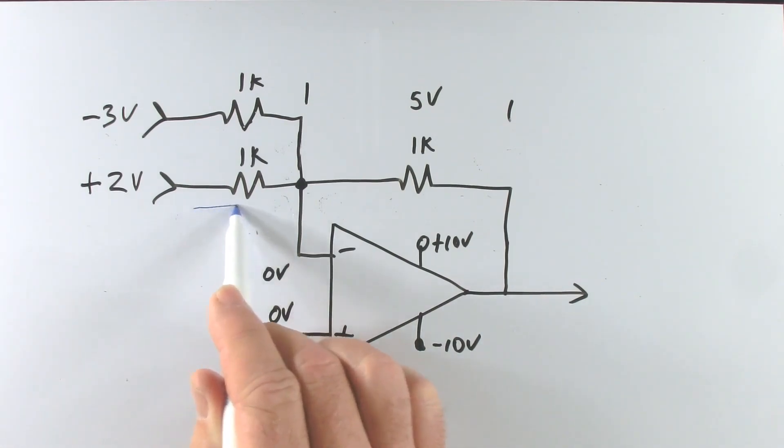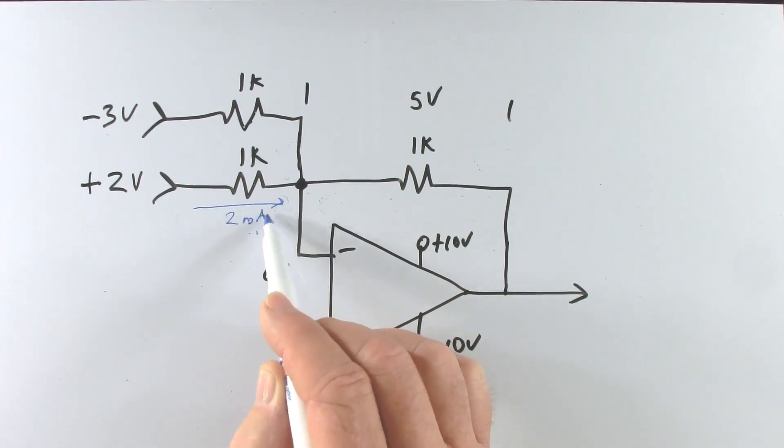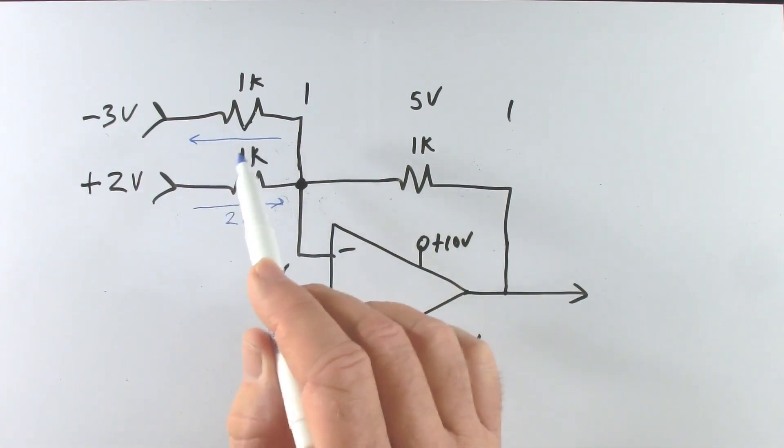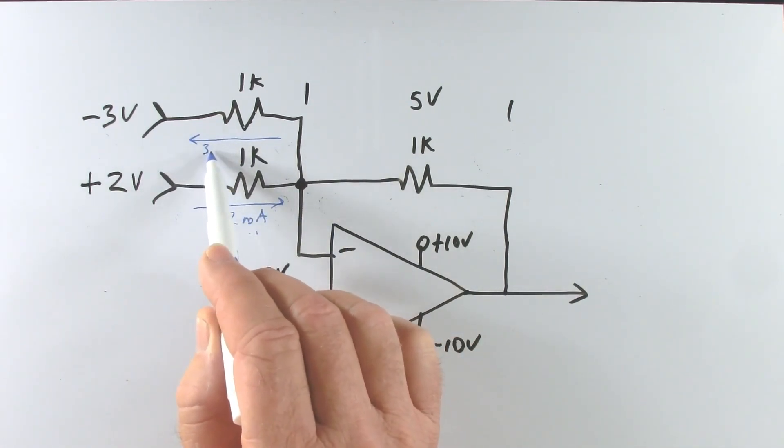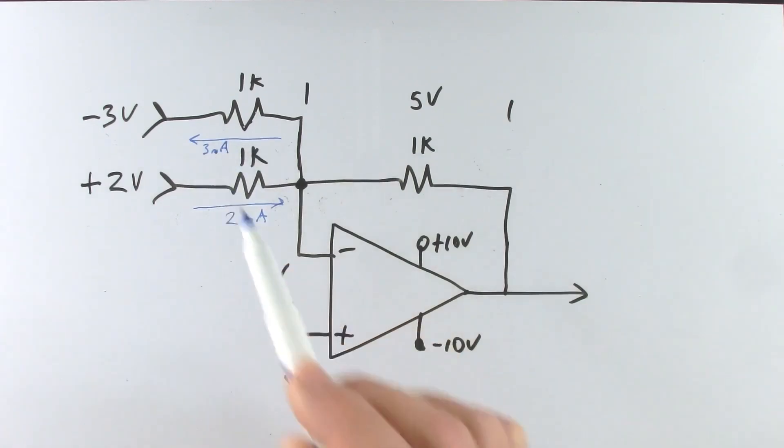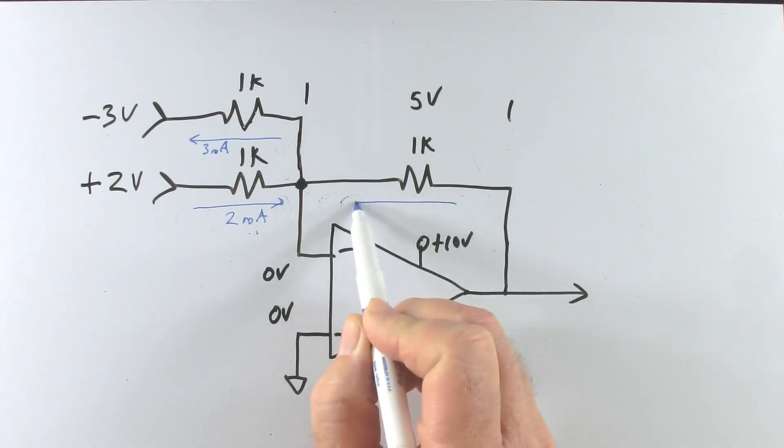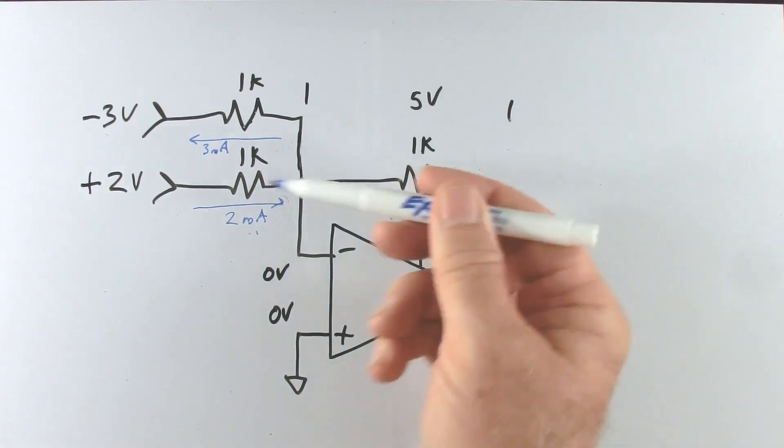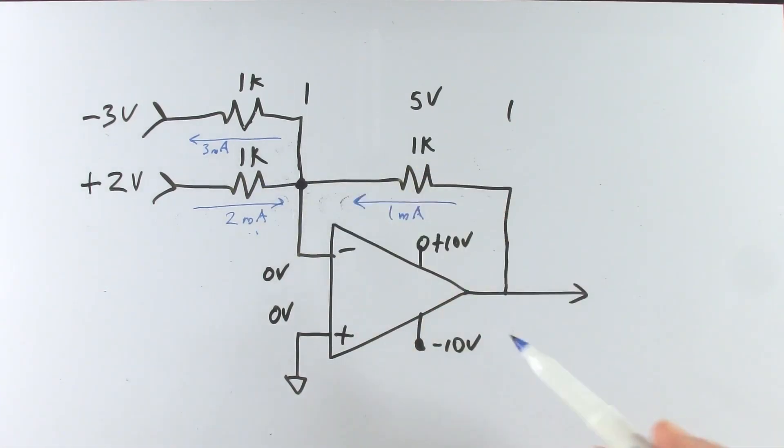Here we have 2 volts across 1k. Current is flowing that direction. That's going to give us 2 milliamps. Here the current is going to be flowing the opposite direction. So we're going to get 3 milliamps flowing the opposite way. So we have 3 milliamps flowing this way, 2 milliamps flowing that way. Therefore we must have 1 milliamp flowing that direction, conventional current, out of the output through this resistor.